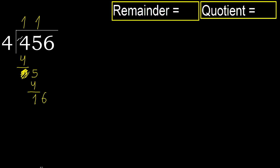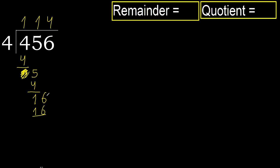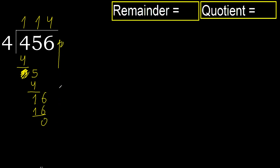Bring down 6 to get 16. 4 multiplied by 4 is 16, which is not greater. Subtract. Next. There is no number remaining, therefore finish it.